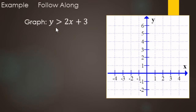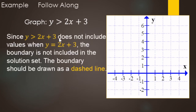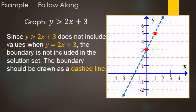We're going to graph y is greater than 2x plus 3. We start by graphing the boundary line y equals 2x plus 3. Since it's strictly greater than, we use a dashed line. This is in slope-intercept form y equals mx plus b. The y-intercept is at 3, so we put a dot there. The slope is 2, so we go up 2 over 1 to find another point. We draw a dashed boundary line through those points.